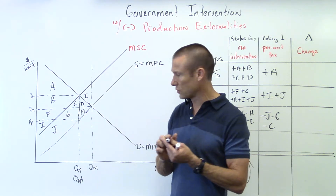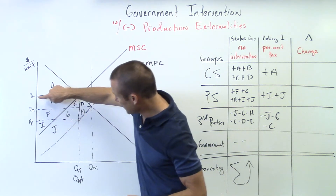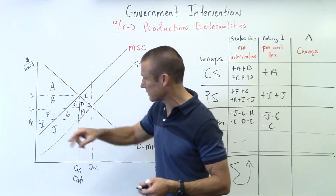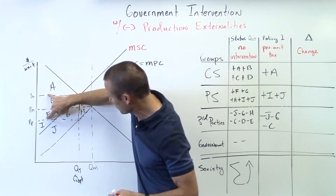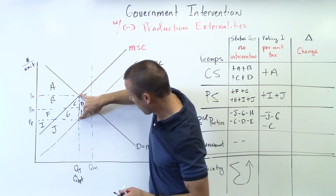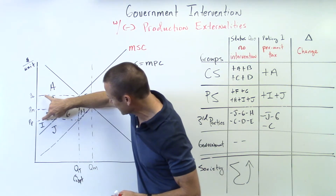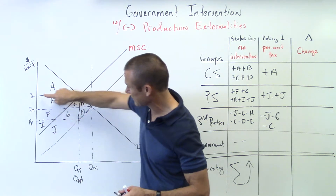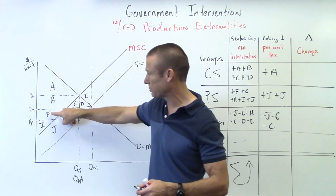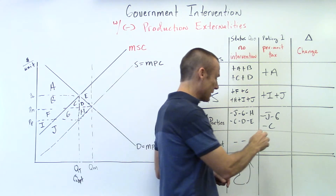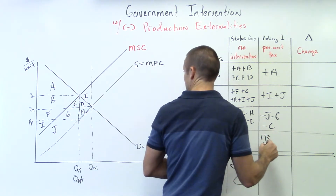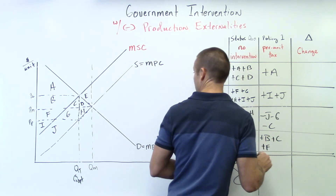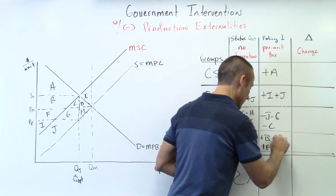Now the government is actually getting some positive welfare — tax revenue they can use for public works or public goods. Let me go through that more carefully: the per unit tax is PC to PP, and moving all the way across to Q-tax, the government is getting plus B, plus C, plus F, plus G.